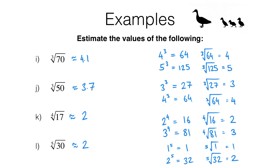The main skill in this lesson is to pick the easy powers or roots just above and just below the one you're trying to estimate. This narrows your range of answers to two consecutive numbers — for example, between 2 and 3. At that point, use your judgment to decide where in that range your answer is going to be.